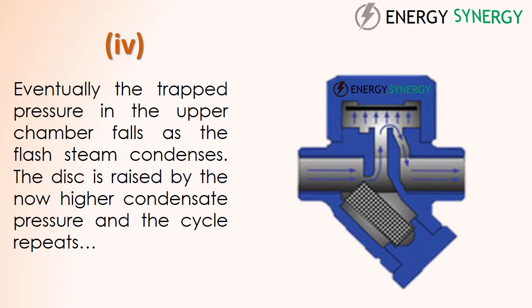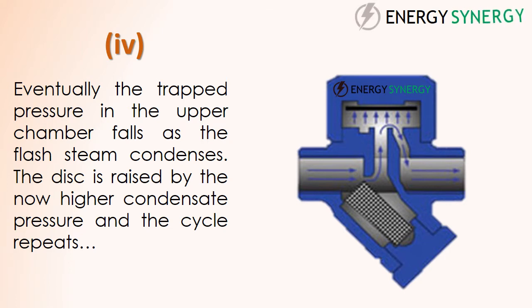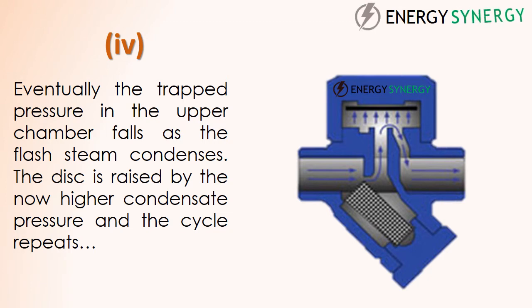Eventually the trapped pressure in the upper chamber falls as the flash steam condenses. The disc is then raised by the now higher condensate pressure, and the cycle repeats.